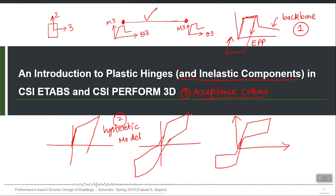After the analysis we can check which capacity was exceeded by demand and which was not. Any action-deformation curve defined by a backbone and a hysteretic behavior should also be associated with acceptance criteria. At least three numbers should be defined at different points on that curve corresponding to the three performance levels. If you are following the ASCE 41 approach, it defines three performance levels: immediate occupancy, life safety, and collapse prevention. The capacities corresponding to these three performance levels should be defined on the curve.